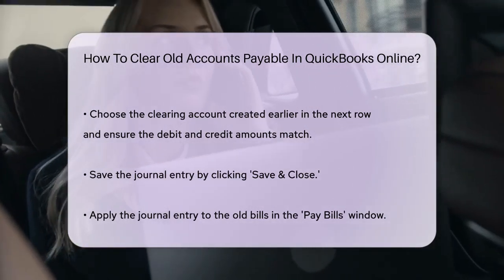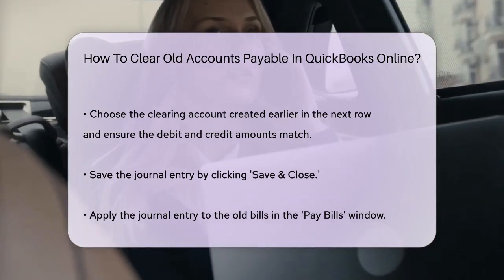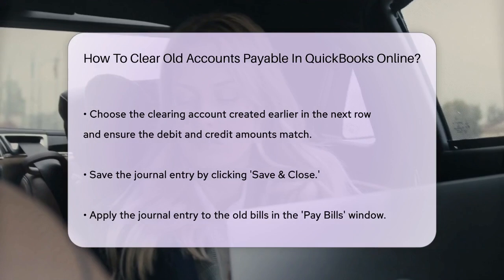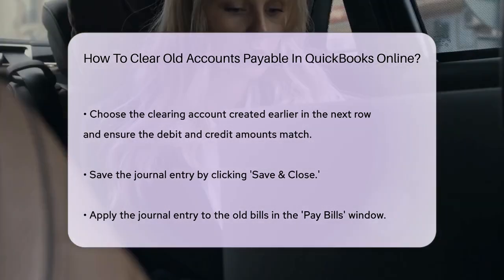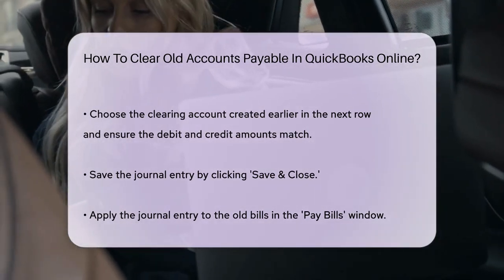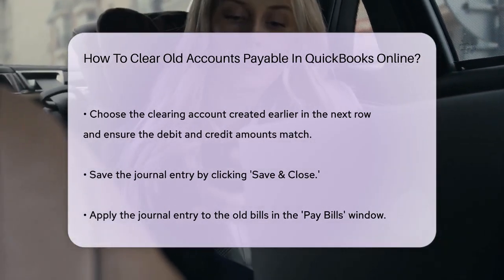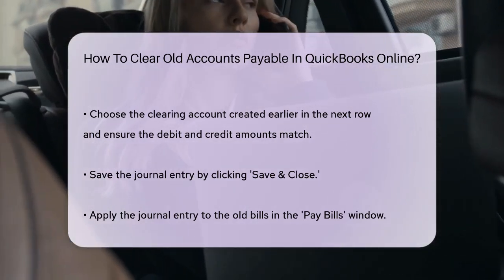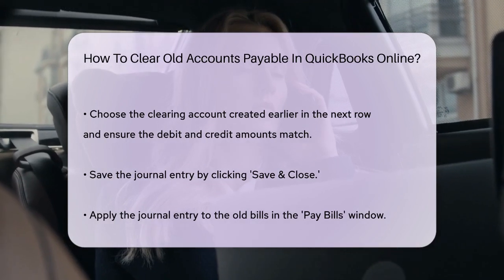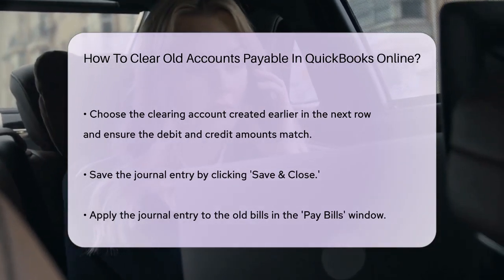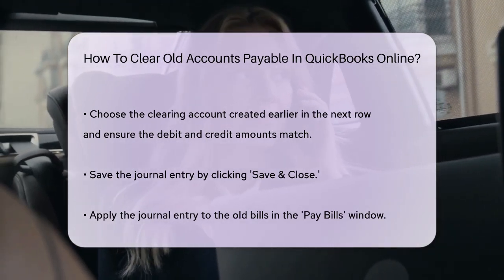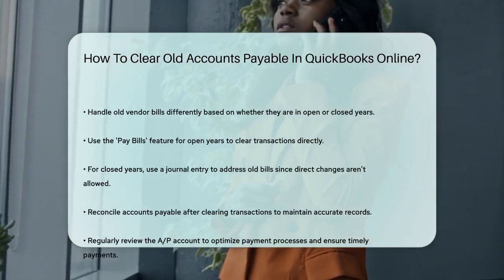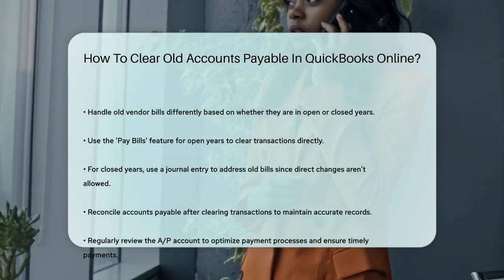Handling Old Vendor Bills. If you have old vendor bills that have already been paid but still show up in your AP Aging Summary or Pay Bills screen, you need to handle them differently depending on whether they are in open or closed years. For open years, you can use the Pay Bills feature to clear these transactions by applying the payment directly. For closed years, you'll need to use a journal entry to clear these old bills, as you cannot make changes directly in closed periods.